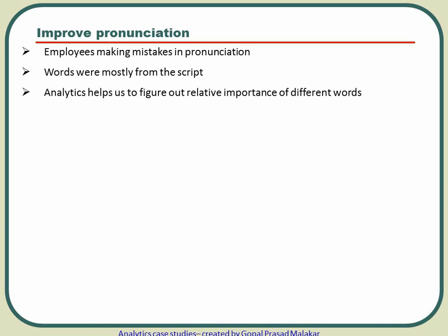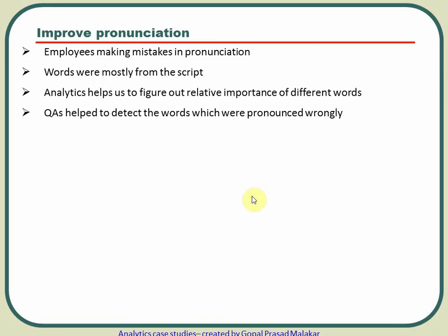On top of that, there are QA quality analysts who do call listening and can pinpoint which words employees are not able to pronounce correctly. So essentially, you take the list of words people pronounce incorrectly, then consider their relative importance, and select those which are more frequent over those which are less frequent.